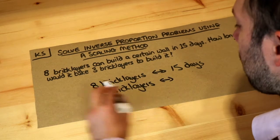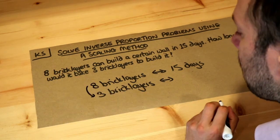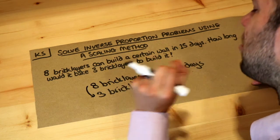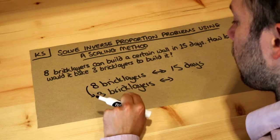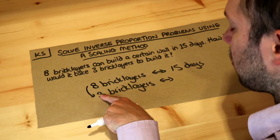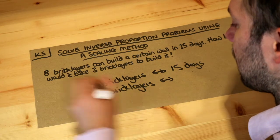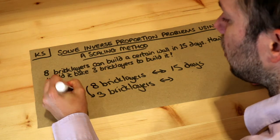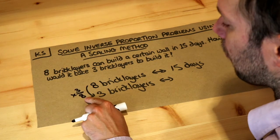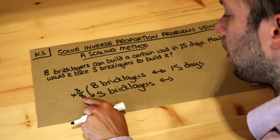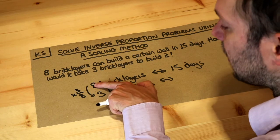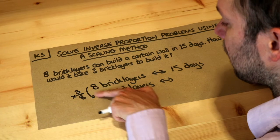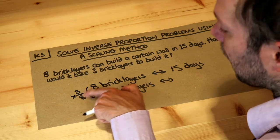Let's think: to get from eight bricklayers to three bricklayers, what would we have to scale by? To find what you multiply by, you just do the second number divided by the first number, so we're multiplying by three over eight. When you multiply something by three over eight — because that's less than one — it's going to make it smaller. And indeed, eight is getting smaller to reach three; eight multiplied by three-eighths is three.